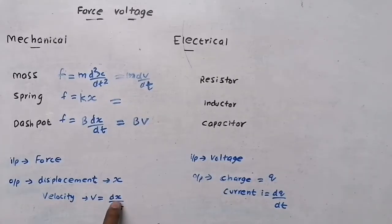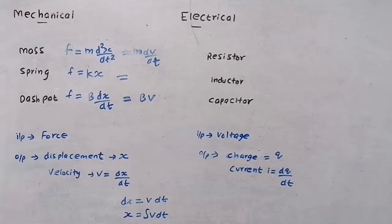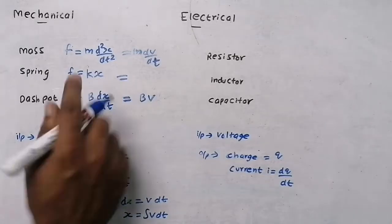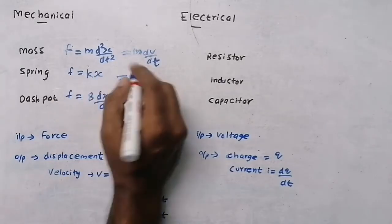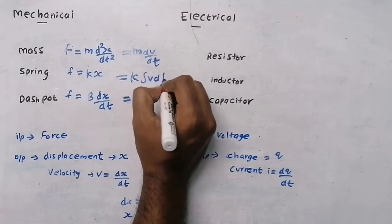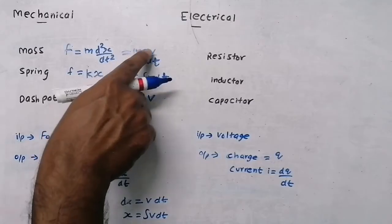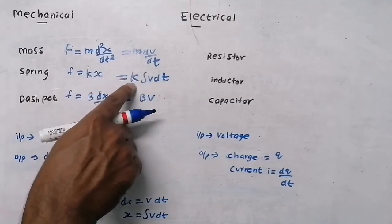To express spring force in terms of velocity: from dx = v·dt, integrating both sides gives x = ∫v dt. Substituting into F = kx gives F = k·∫v dt. So all three mechanical equations in terms of velocity are: F = m·(dv/dt) for mass, F = k·∫v dt for spring, and F = b·v for dashpot.